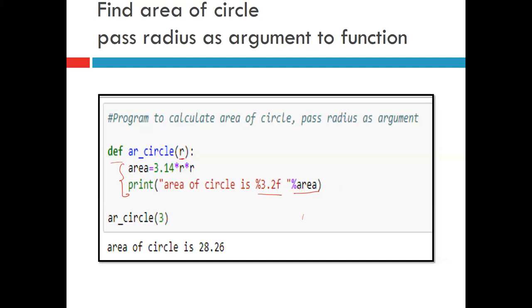When we call area_circle with value 3, this value goes to r. The function calculates 3.14 × 3 × 3 = 28.26, and it prints 'area of circle is 28.26'. Here we haven't used any return statement — we simply created a function, passed an argument, and used it directly.